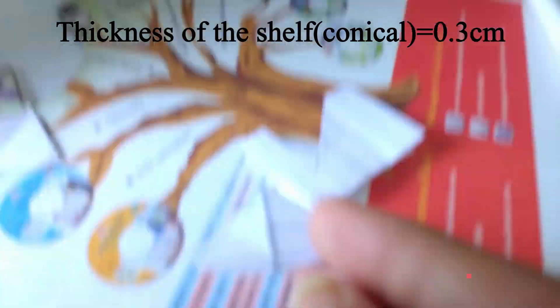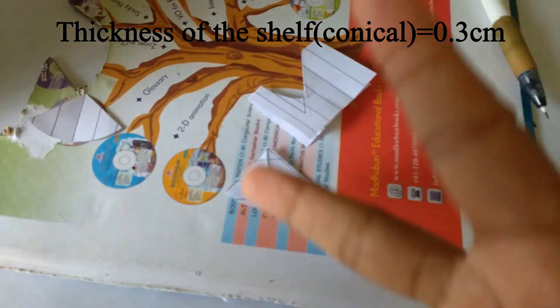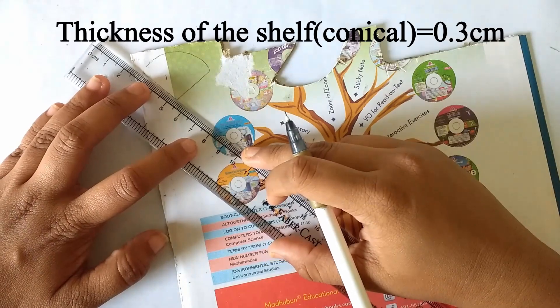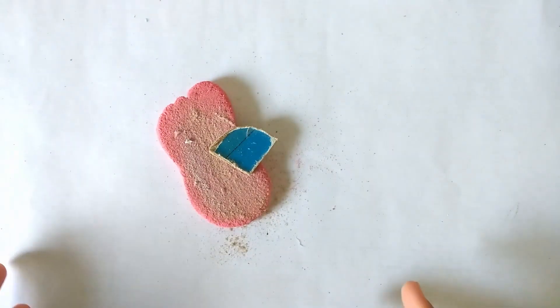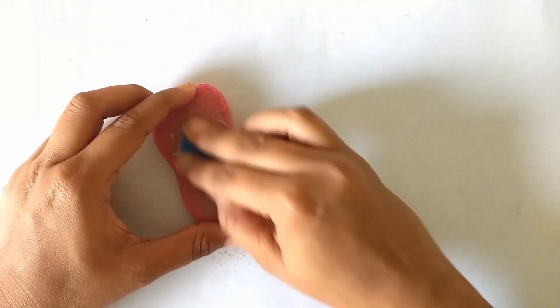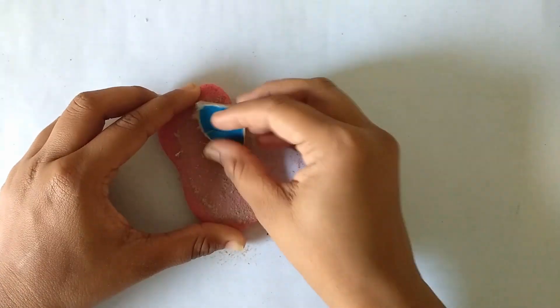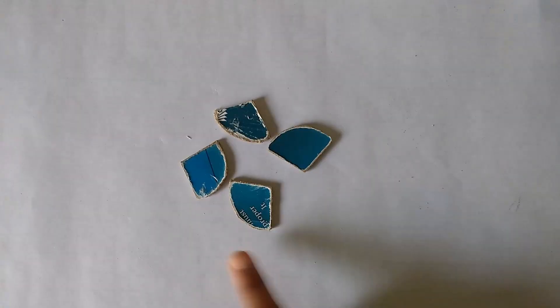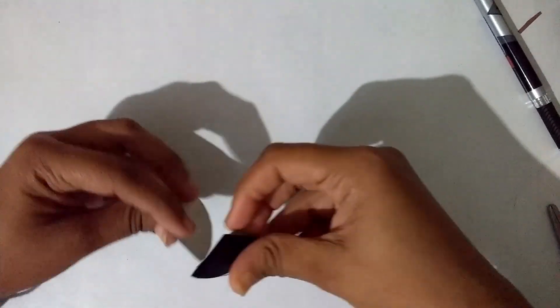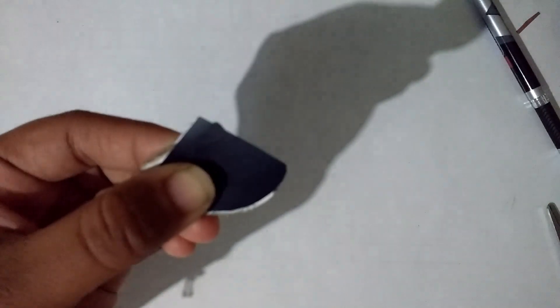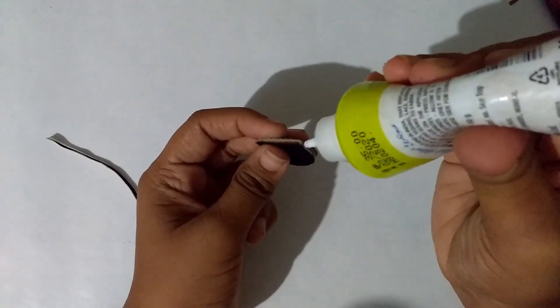I'm doing a total of 4 bookshelves and the thickness of my shelf is around 0.3 centimeters. I've used a normal cardboard and you can scrape off the rough edges with a footpath scrubber. Now take the stickers out, total two stickers, one from the top and one from the bottom.